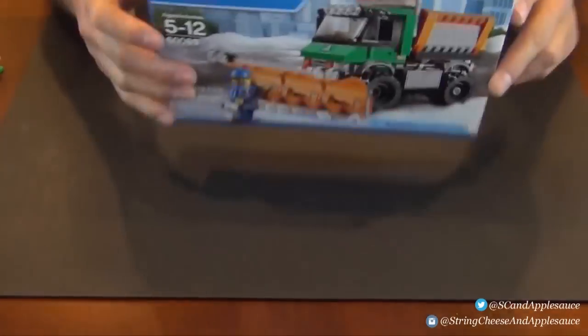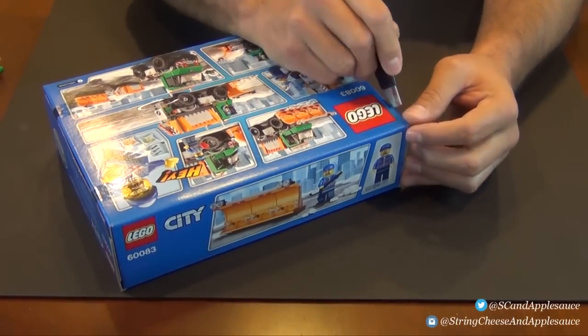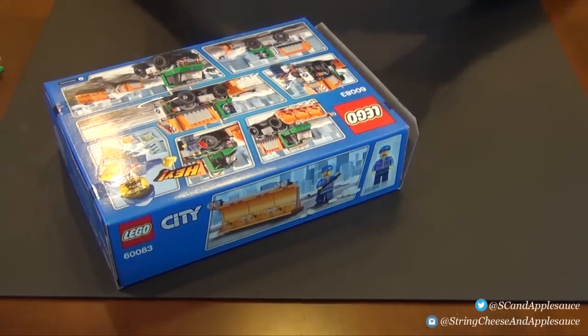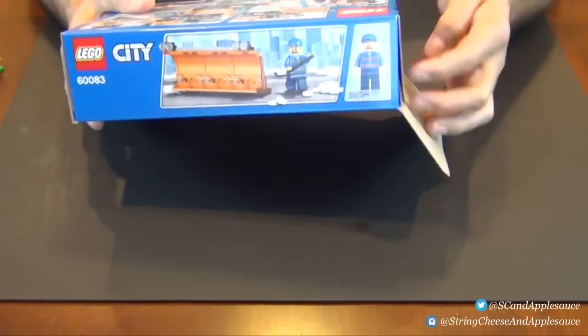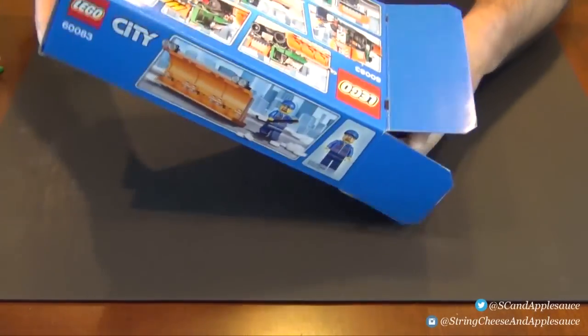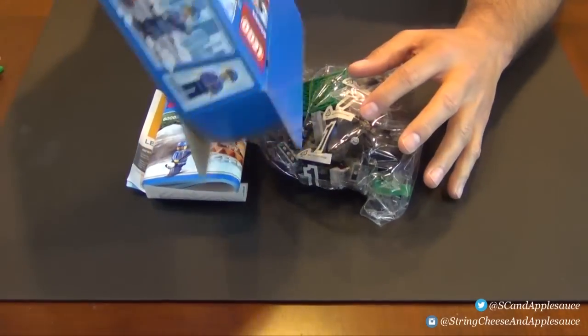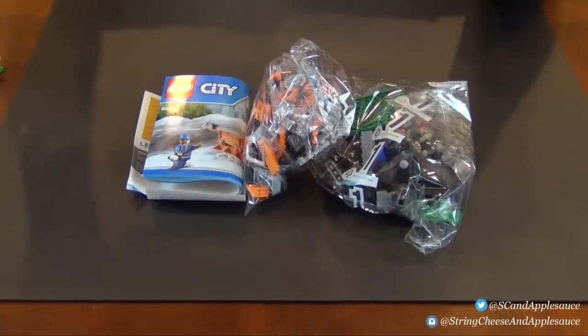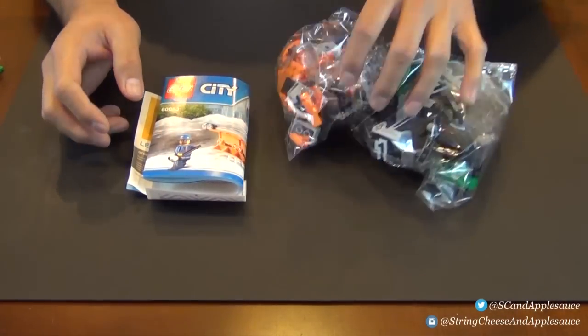Alright, so here we go with some more city action, this is the snow plow. Choosing this favorite city colors of late, the orange and green. We had plenty of orange with the arctic sets, now we're going to continue it with the city sets.